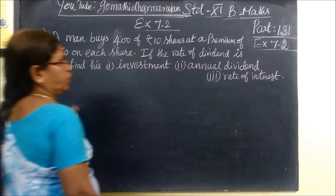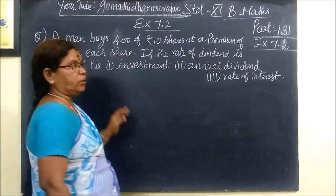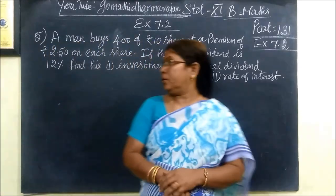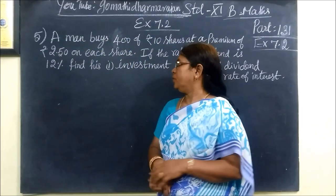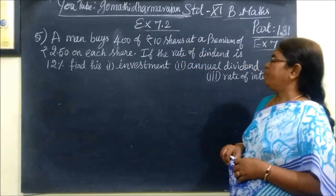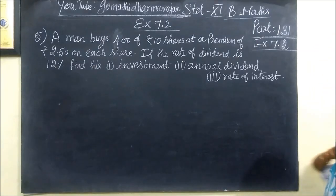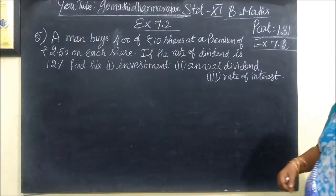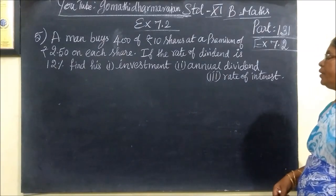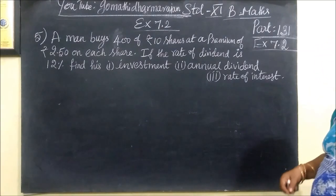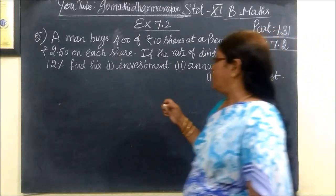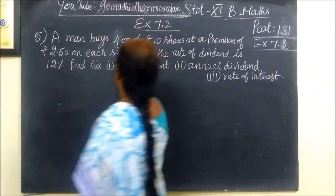Next question is Part 131, Exercise 7.2, Question number 5. A man buys 400 Rs.10 shares at a premium of Rs.2.50 on each share.